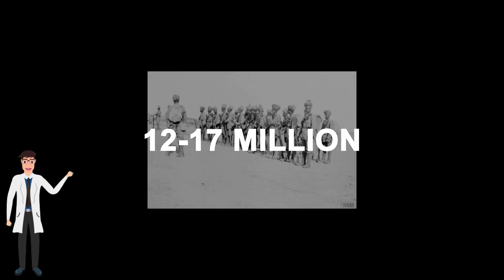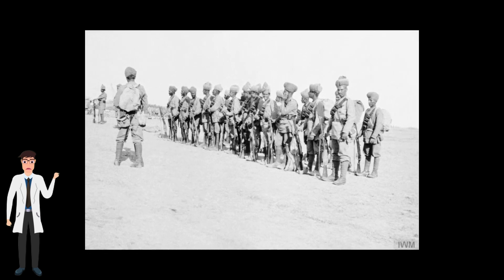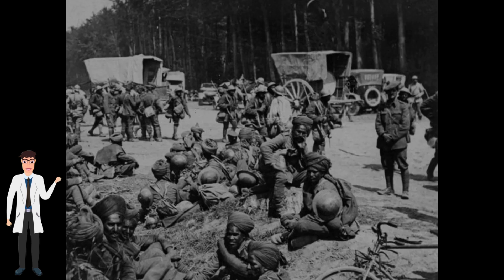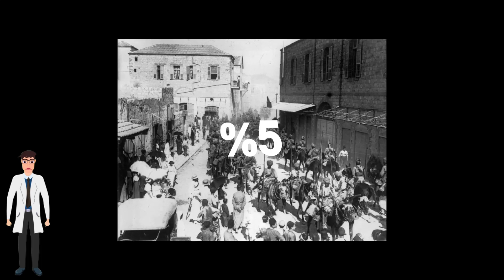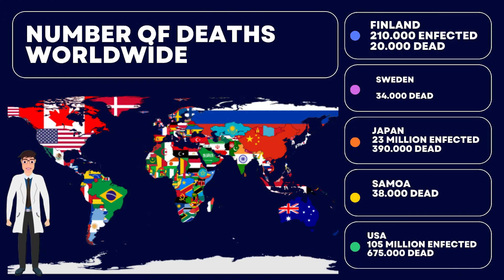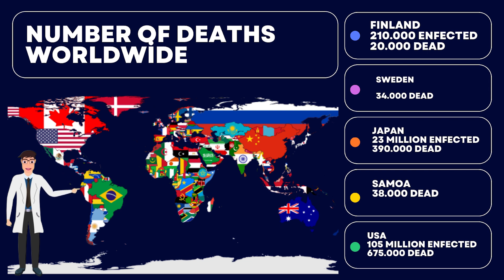Considering that not every country kept records and numbers varied, it is known that 12 to 17 million people died in India, representing five percent of India's population at the time. Additionally, 210,000 people were infected and approximately 20,000 died in Finland, and about 34,000 people died in Sweden.